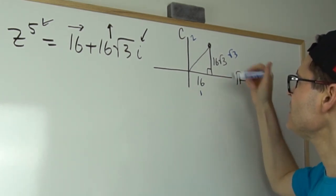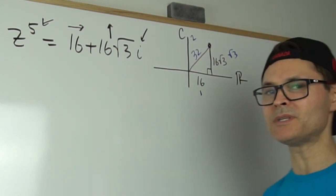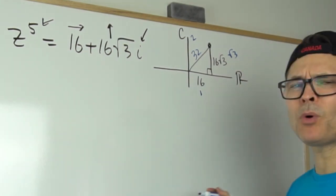So you can see here that this here is going to be 32. So it's normally a 1, 2, √3, but it's just been scaled up by a factor of 16. Why is that important?